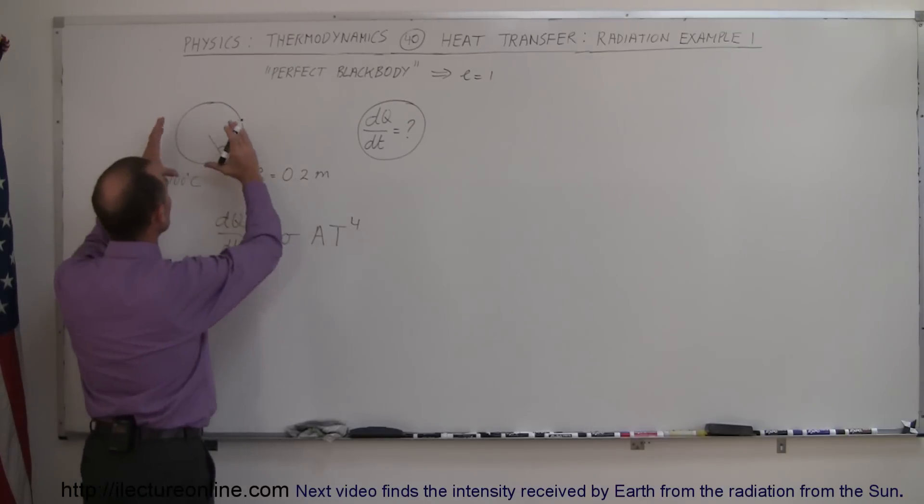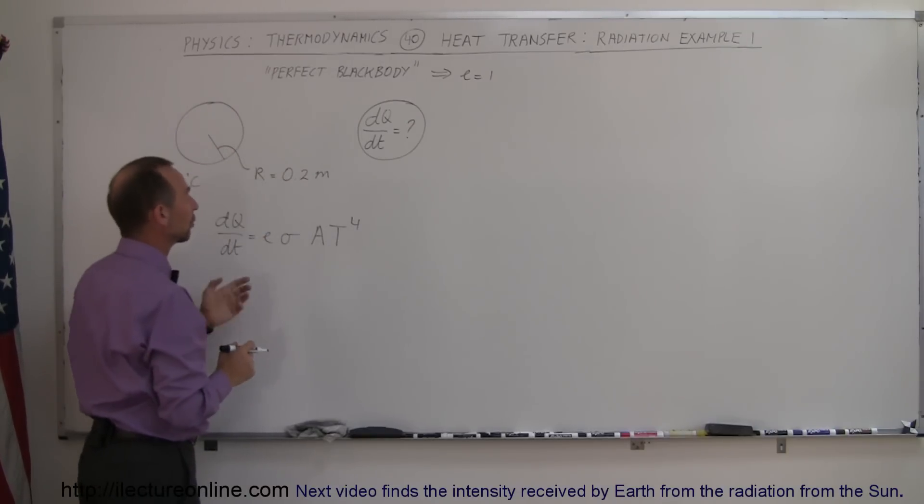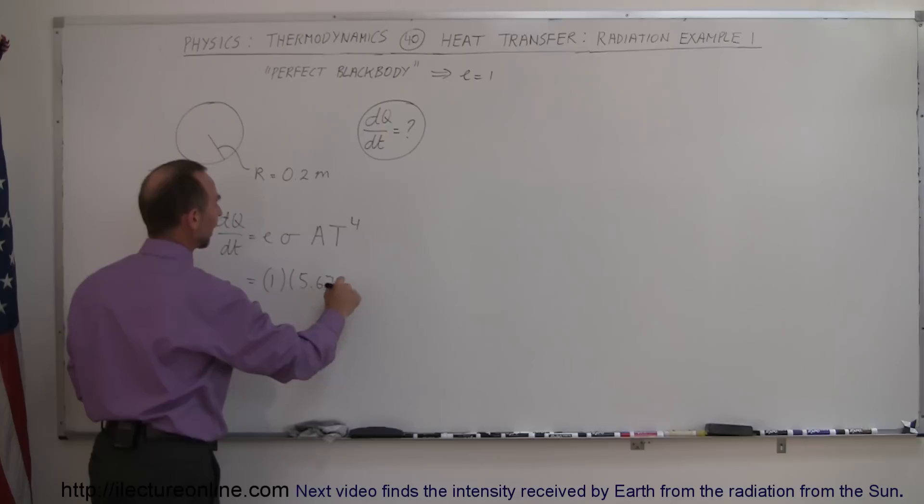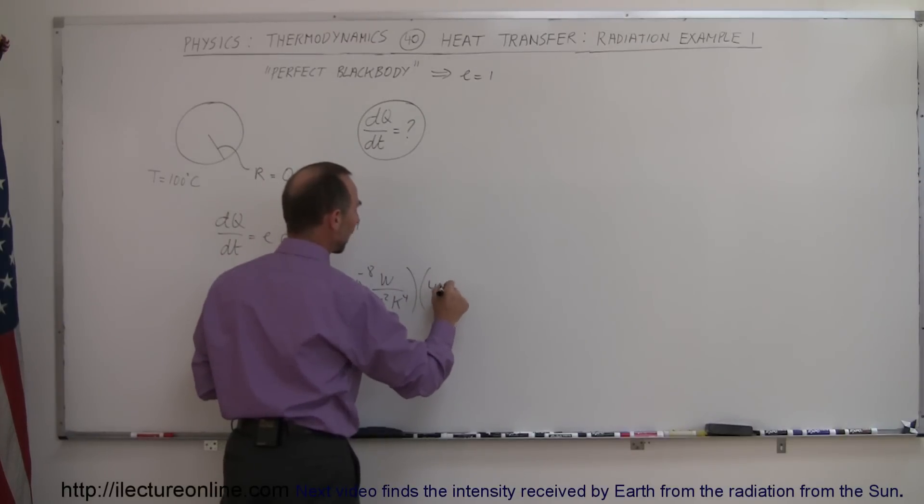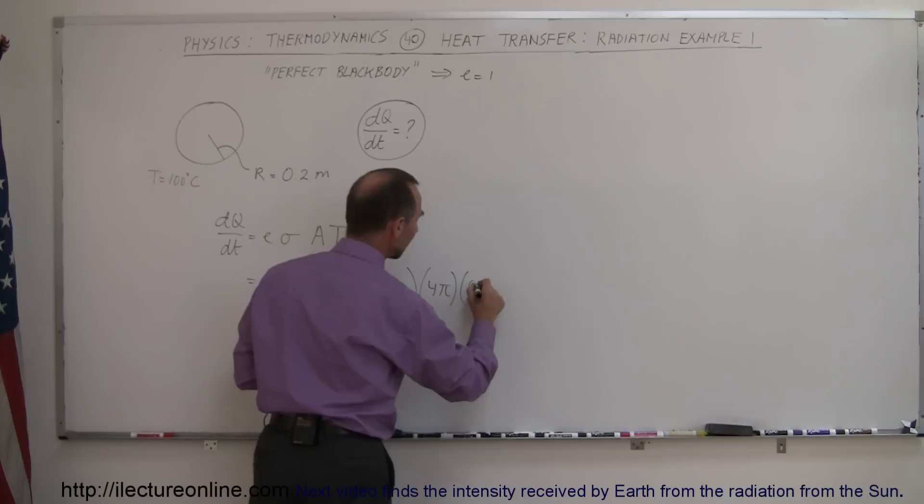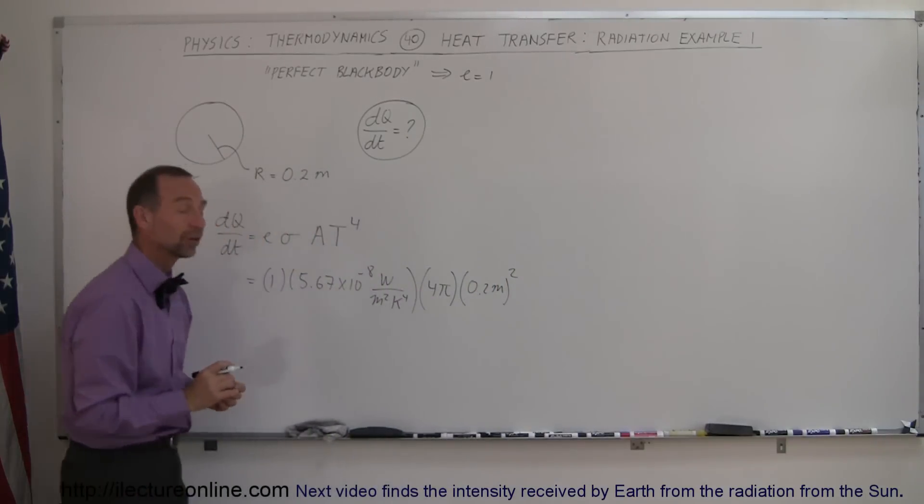We're given a sphere of a radius of 0.2 meters, and we have to calculate the area or the surface area of that sphere. So this is equal to 1. The constant is 5.67 times 10 to the minus 8, that's watts per square meter times Kelvin to the fourth power. The area of the sphere would be 4π times the radius squared, and the radius is 0.2 meters, and we have to square that. So that's the surface area of the sphere.